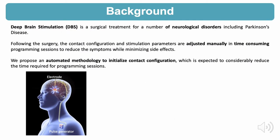Deep brain stimulation, or DBS, is a surgical treatment for a number of neurological disorders such as Parkinson's disease and essential tremor. The procedure involves the implantation of an electrode into the brain to deliver electrical impulses to a specific area in the brain called the target structure.